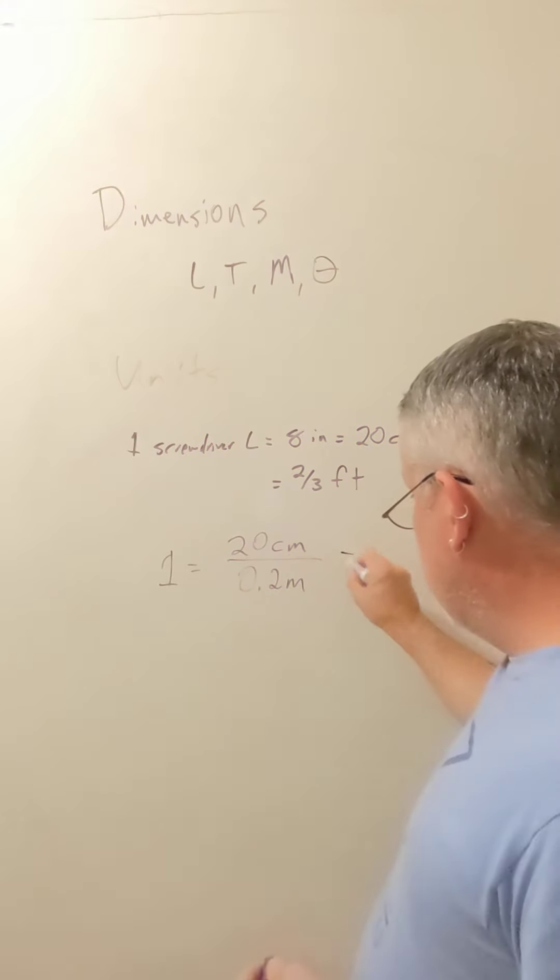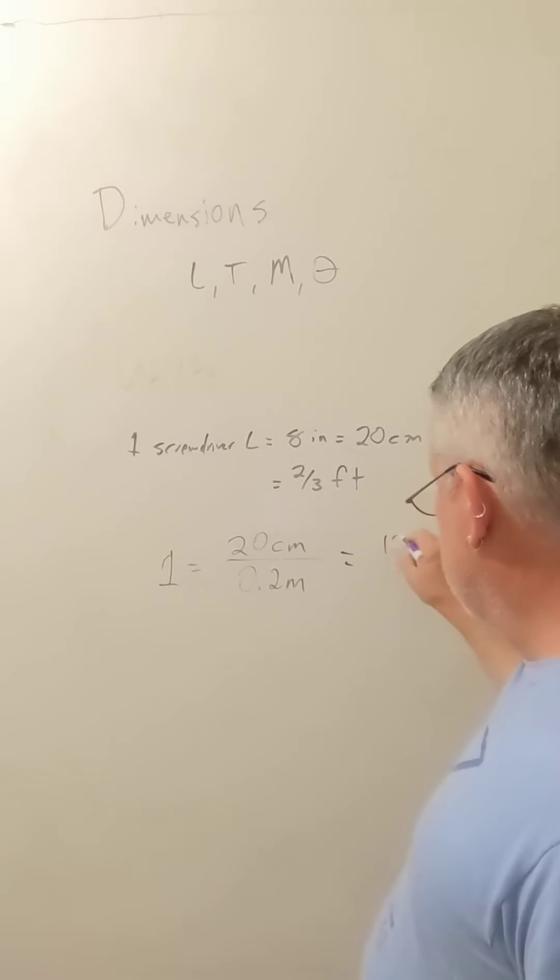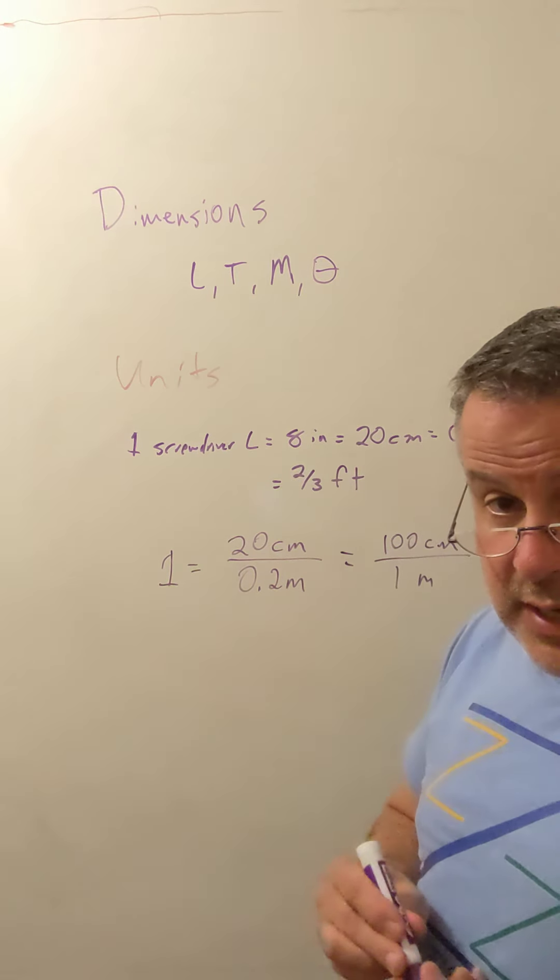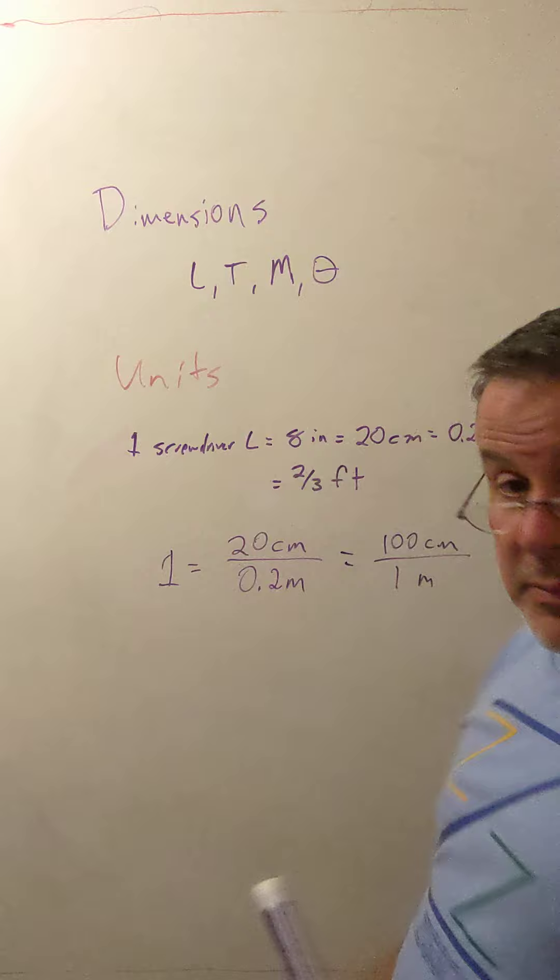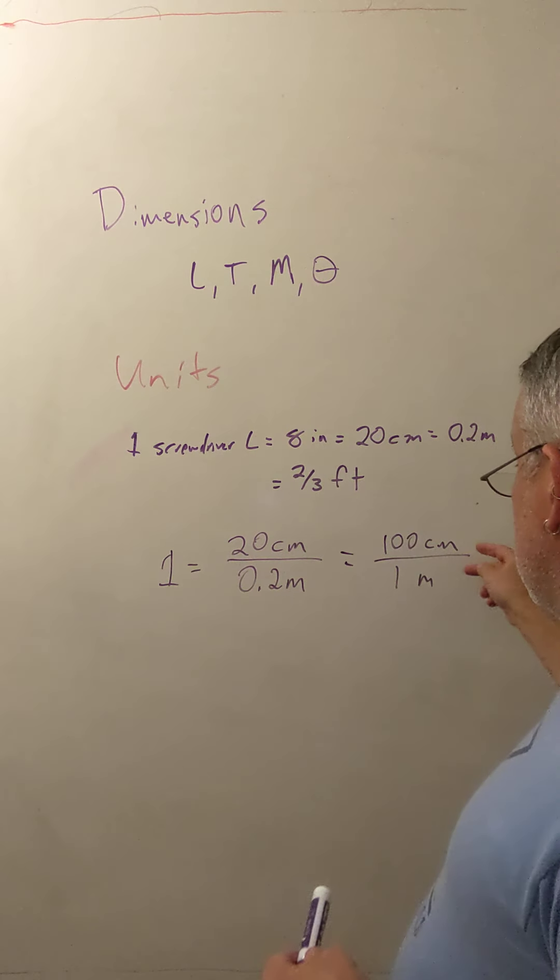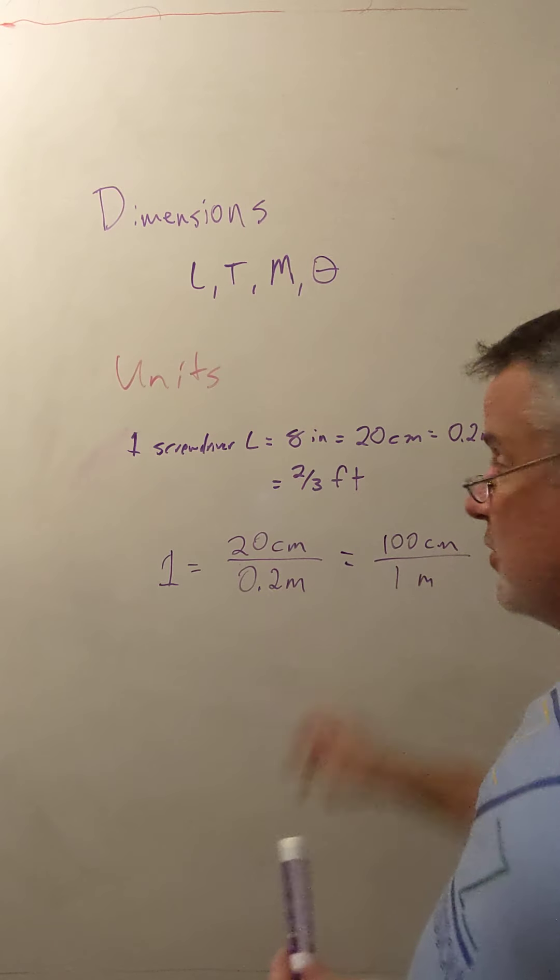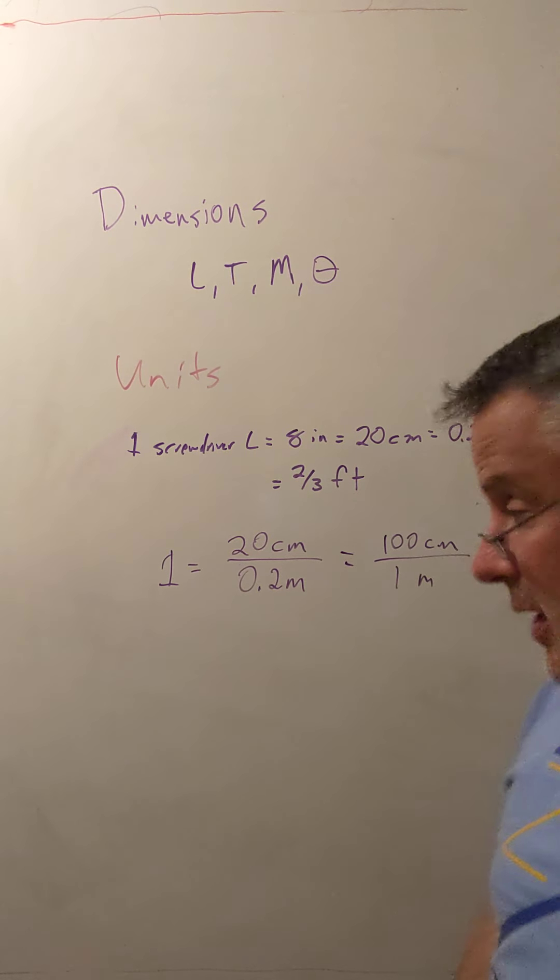And the reason why, and we know that that's going to equal 100 centimeters over 1 meter, if we were to change and reduce the fraction to move the 0.2 downstairs out, multiplying top and bottom by 5, this is how we convert between things that have different units.